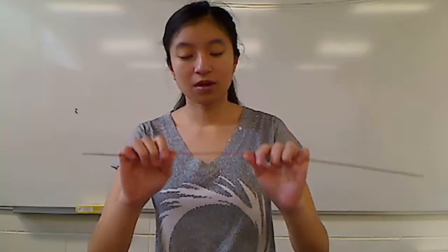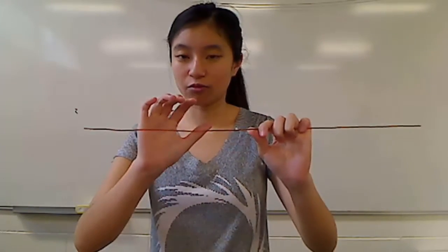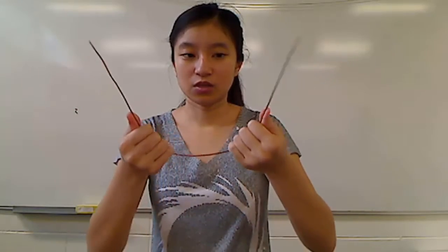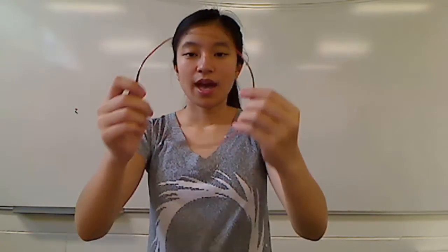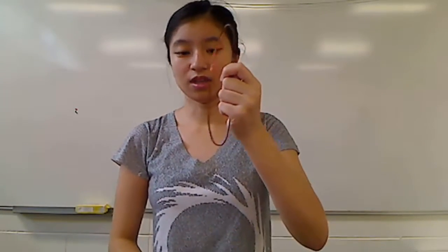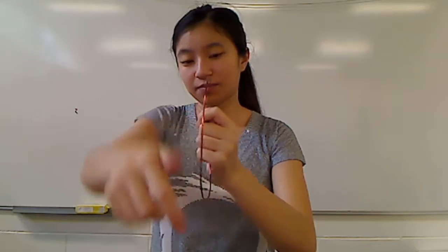I can find the magnetic field around each individual part of the wire with the right-hand rule. So if I twist this wire into a loop and then rotate it, so one side faces you and one side faces me. Now let's say I had a current in this wire going towards me down the bottom, up the back, towards you on top and down the front.